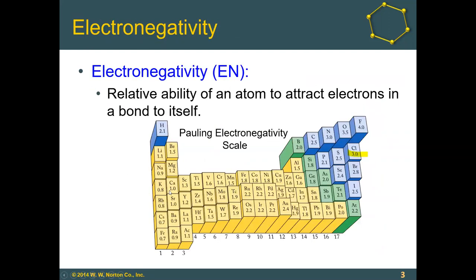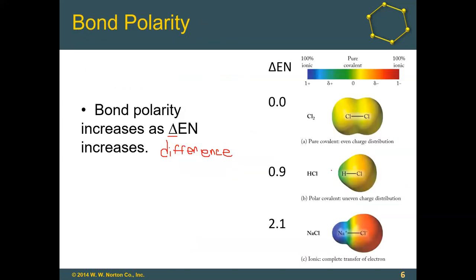Looking at hydrogen and chlorine: hydrogen has an electronegativity of 2.1 and chlorine is still 3.0. The difference between 2.1 and 3.0 is 0.9 — this makes it a polar covalent bond with an uneven charge distribution. Chlorine has a partially negative charge and hydrogen has a partially positive charge. To draw the dipole for HCl, we draw an arrow from the hydrogen to the chlorine, putting a plus sign on the hydrogen end to show which direction the electrons are shifted.